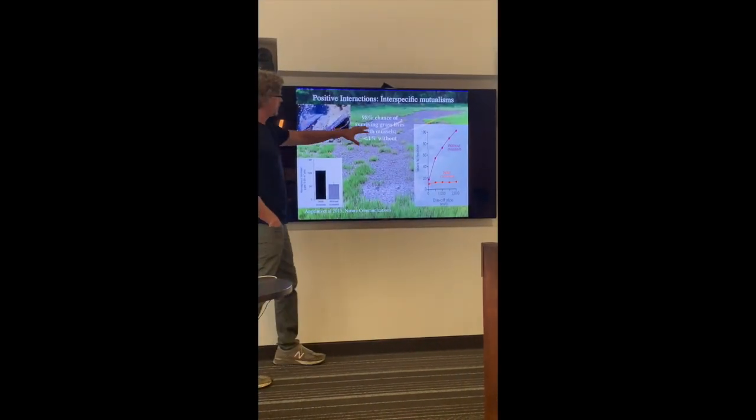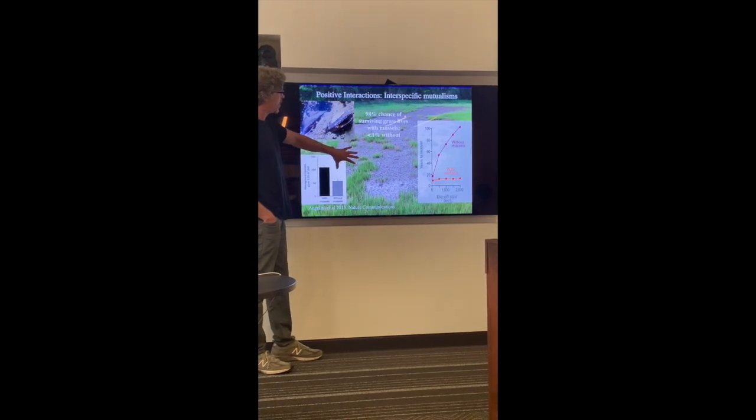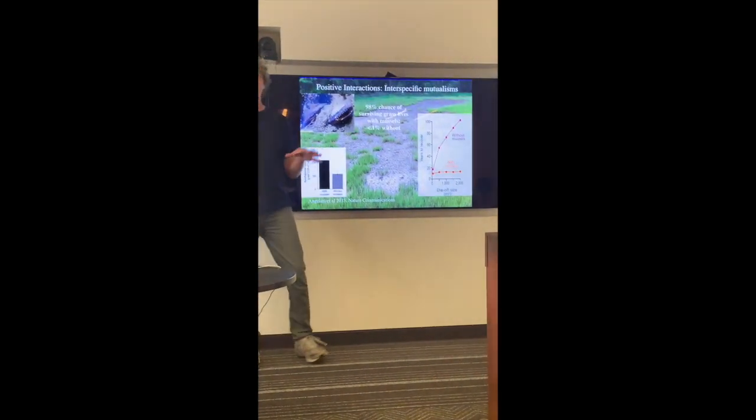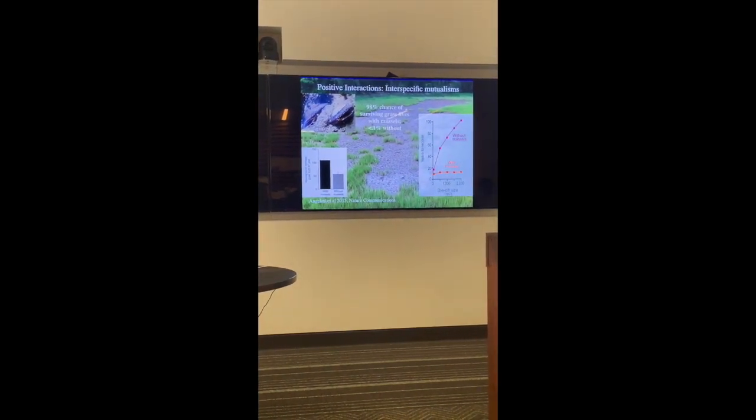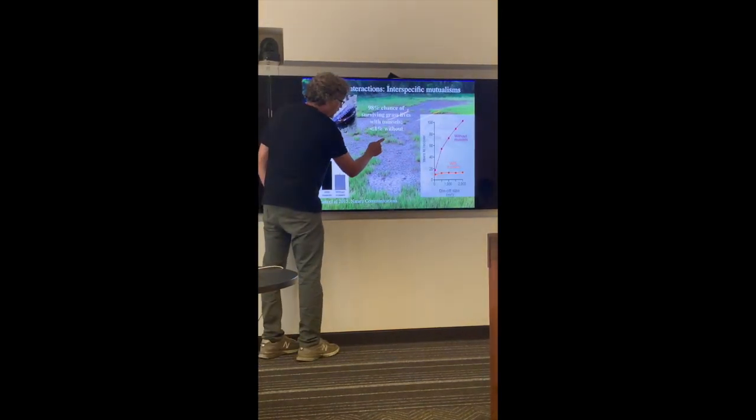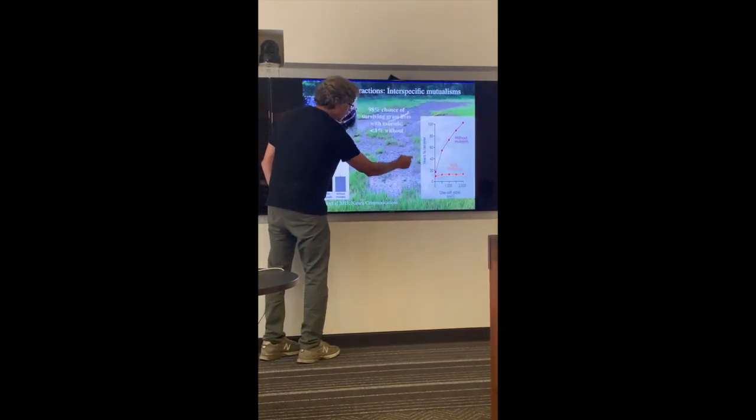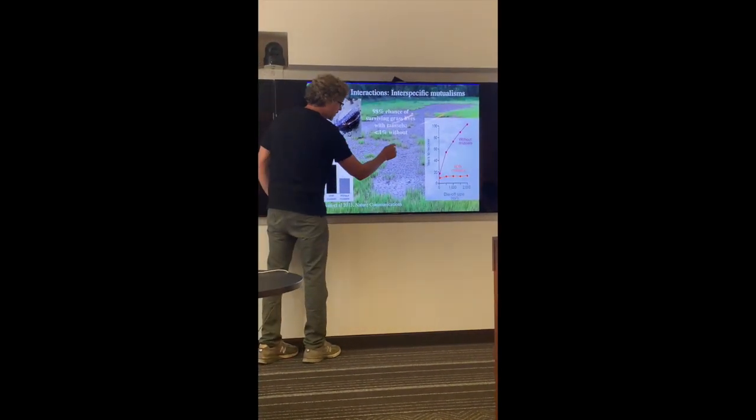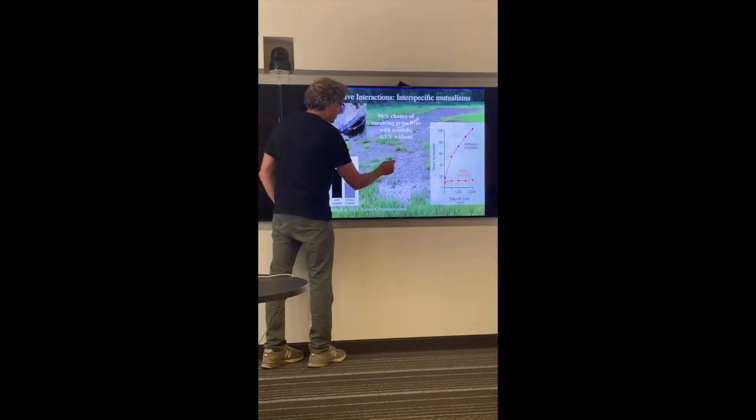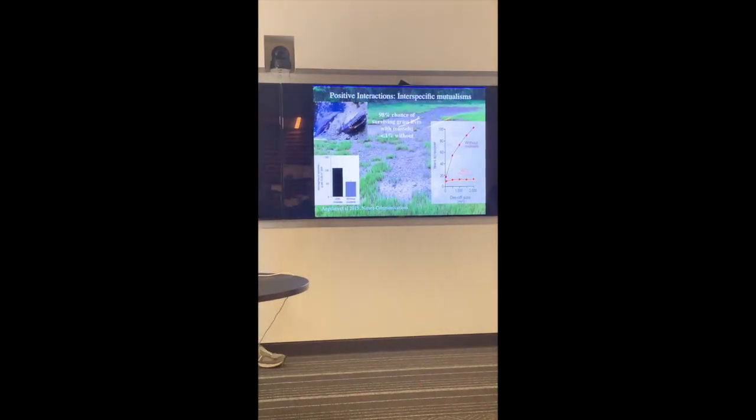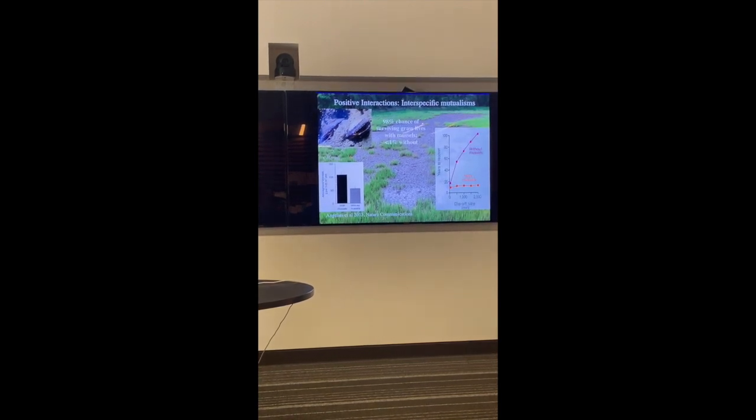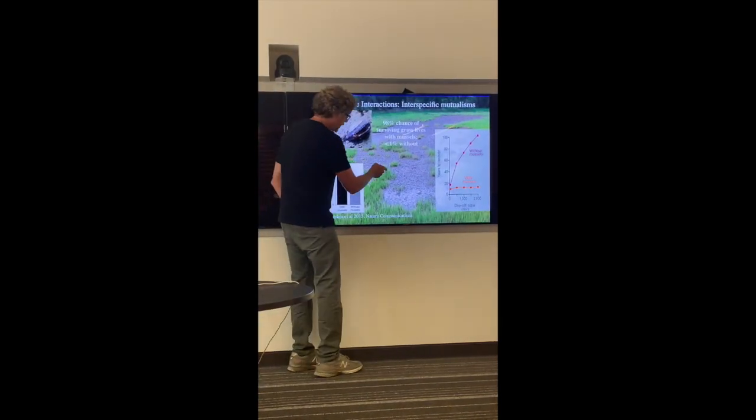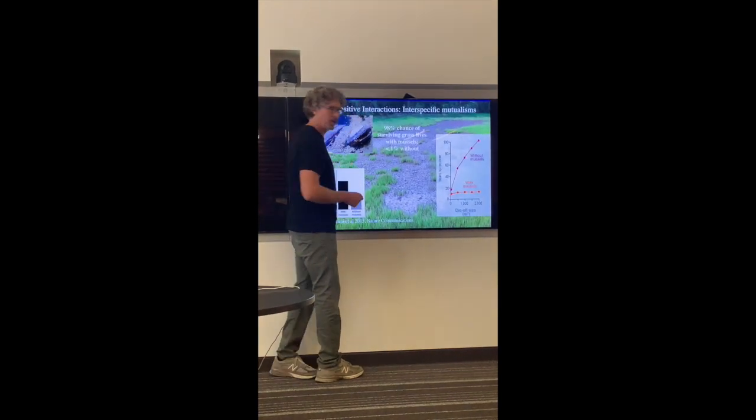We also found that interspecific mutualisms are critically important and are likely the reason this system is not slipping into an alternate stable state as drought frequency increases. This is a drone picture of a smaller die off area. Die off is not complete. There are all these remnant patches. Those remnant patches are really important because this system closes up through clonal growth, not through seedling establishment. Their high edge to area ratio means that they contribute disproportionately to the regrowth in that system.